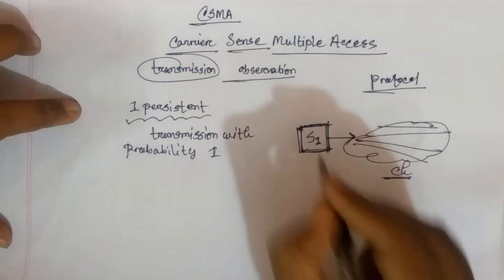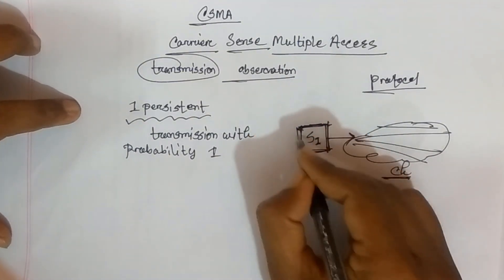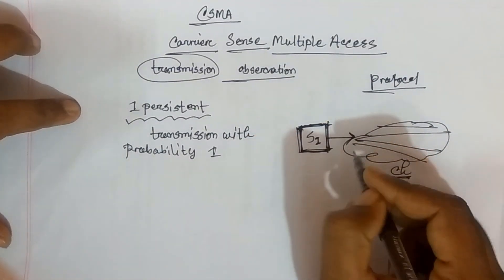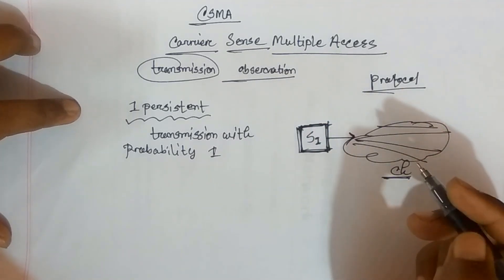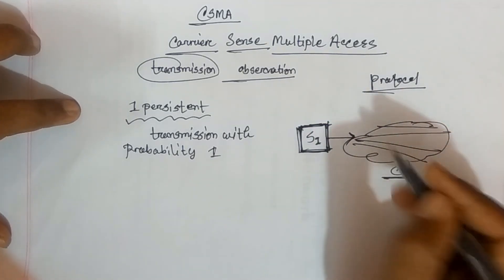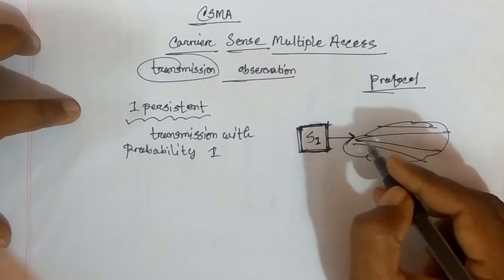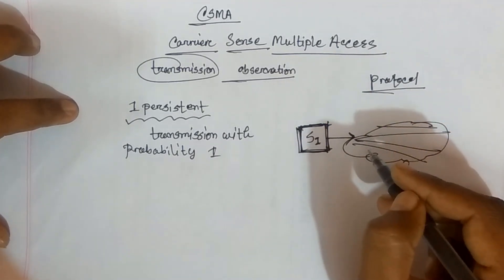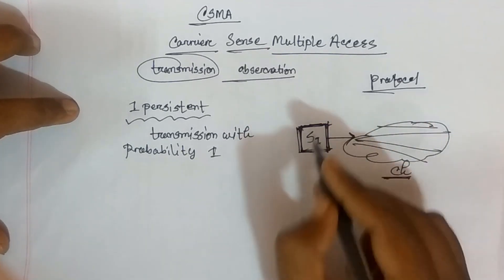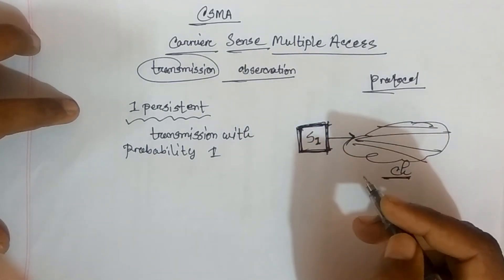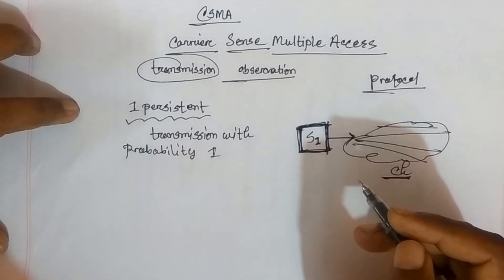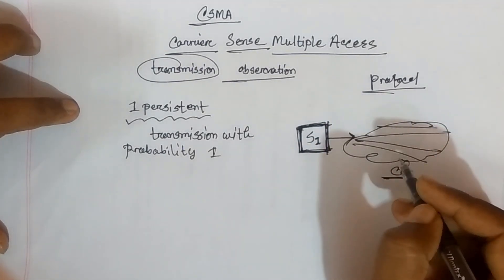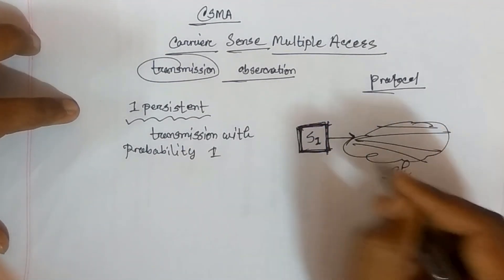In One-Persistent, the station will sense the channel. If the channel is free, it will transmit immediately. The One-Persistent protocol will be used when the channel is found to be free.